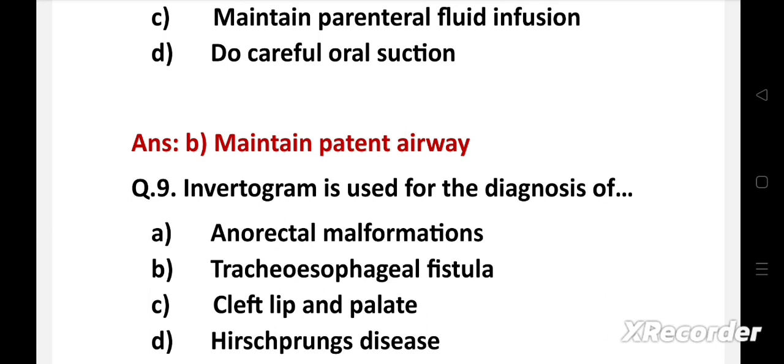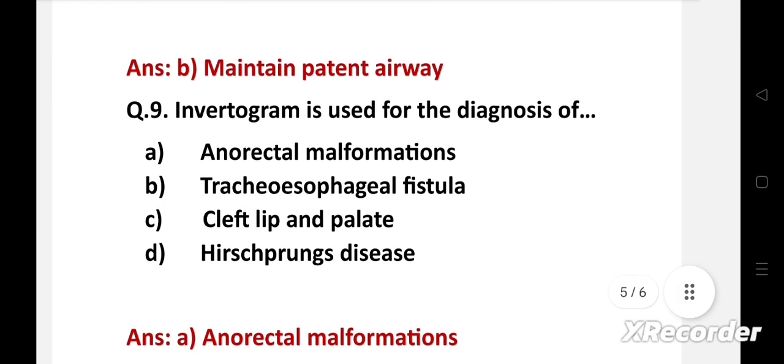Next question: Invertogram is used for the diagnosis of — option A: anorectal malformations, B: tracheoesophageal fistula, C: cleft lip and palate, D: Hirschsprung's disease. Right answer is option A, anorectal malformations. Invertogram is used for the diagnosis of anorectal malformations. Anorectal malformations are a wide spectrum of developmental deformities involving the distal anus and rectum as well as urinary and genital tracts.